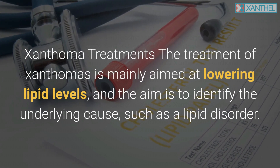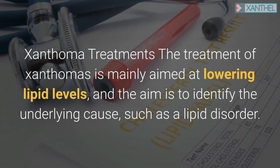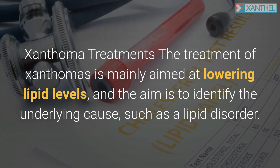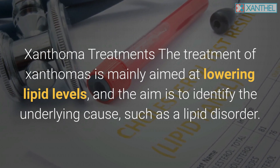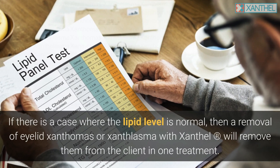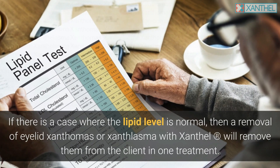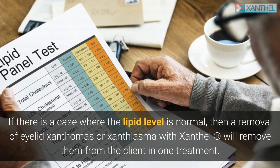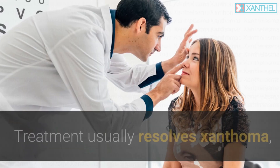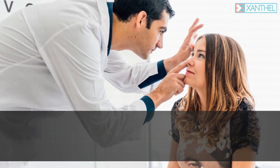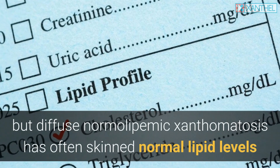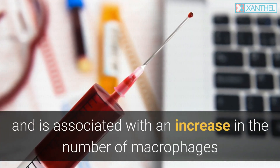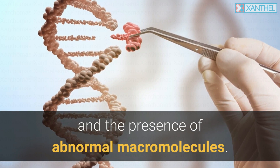The treatment of xanthomas is mainly aimed at lowering lipid levels, and the aim is to identify the underlying cause such as a lipid disorder. If lipid levels are normal, removal of eyelid xanthomas or xanthalasma can be performed in one treatment. Treatment usually resolves xanthomas, but diffuse normolipemic xanthomatosis often occurs with normal lipid levels and is associated with an increase in macrophages and the presence of abnormal macromolecules.